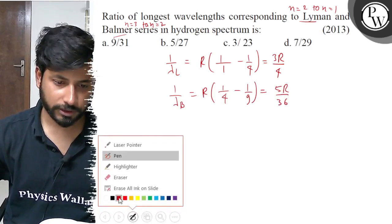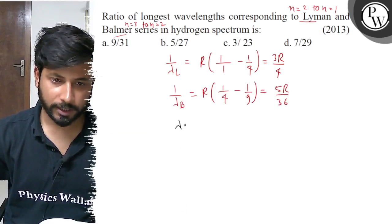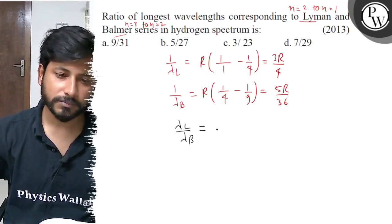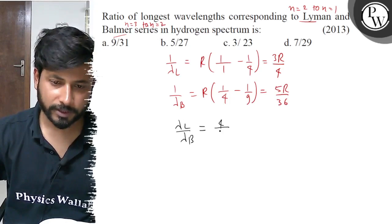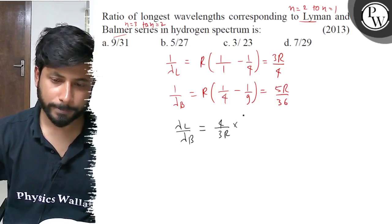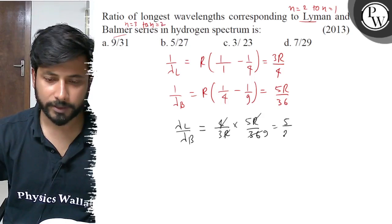When we take the ratio, lambda L upon lambda B, we get 4 by 3R multiplied by 5R by 36. R cancels, giving us 5 by 27.